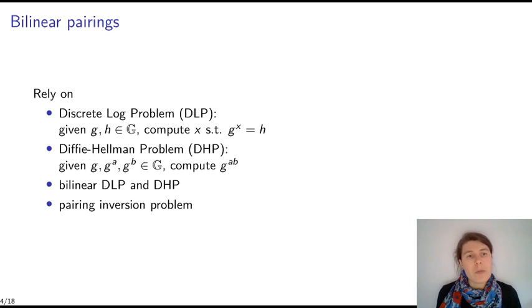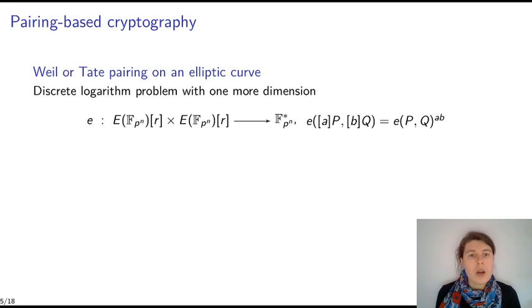The security of the pairing relies on the discrete logarithm problem, the Diffie-Hellman problem, the bilinear counterparts, and the hardness of the pairing inversion. More precisely, a pairing is a Weil or a Tate pairing on an elliptic curve. The two input groups, G1 and G2, are an elliptic curve, and the target group is a finite field. That's why we use additive notation for G1 and G2 and multiplicative notation for Gt.